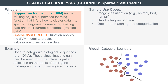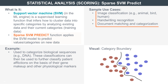SVMs use existing classifications, also called training data, to build a model that assigns new categories to brand new data. This is another type of clustering or classification function, and each of these functions has different strengths. The sparse SVM PREDICT applies the SVM to create categories on new data, with use cases including image classification and handwriting recognition.